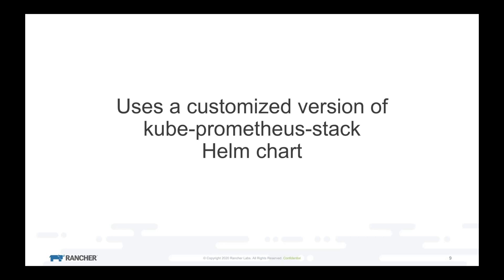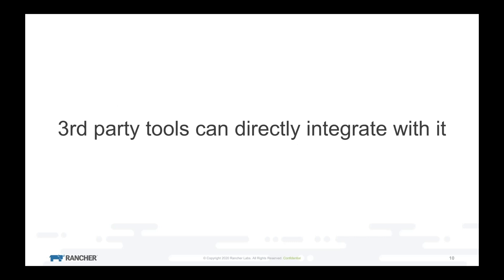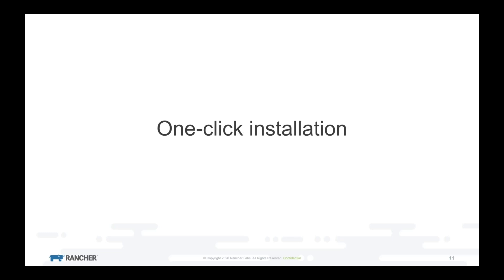Monitoring V2 is based on a customized version of the upstream kube-prometheus stack Helm chart, and Rancher contributes back to it. Customizations are mostly for ease of use, ease of installation, and better integration into the Rancher UI. It also connects well with other Rancher components like Istio and logging. By using this upstream Helm chart, it's easier for third-party tools and existing operators to directly integrate with it. You still have one-click installation of the complete monitoring stack, with nice UI integrations to access Grafana directly, see alerts, and set up additional configurations.